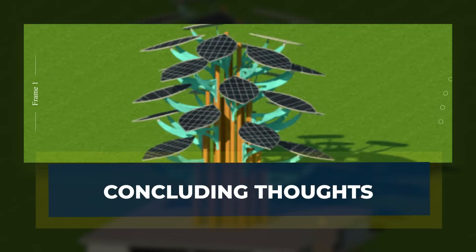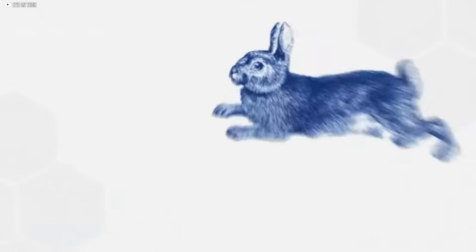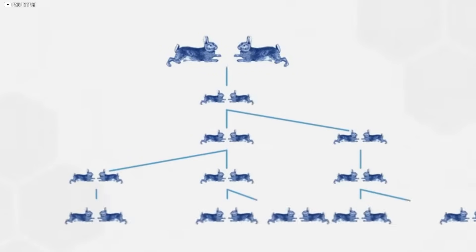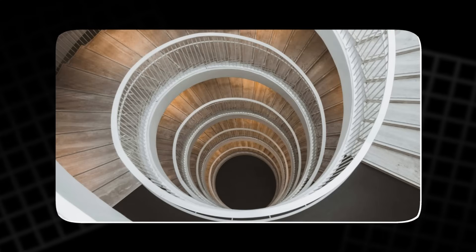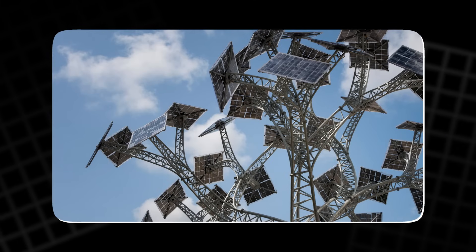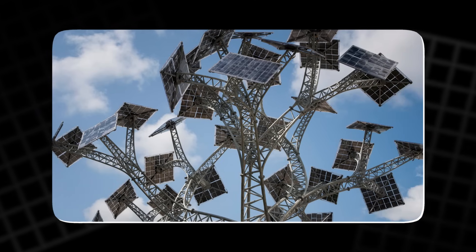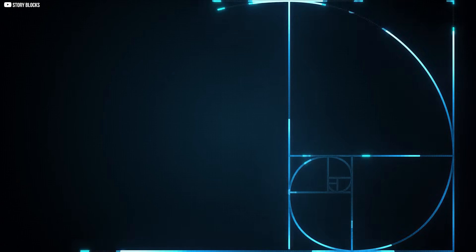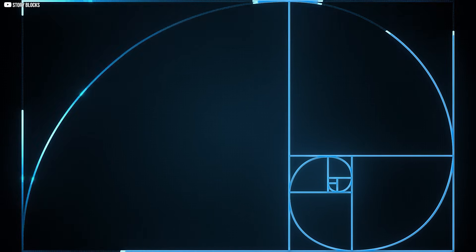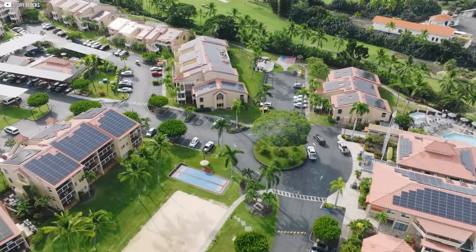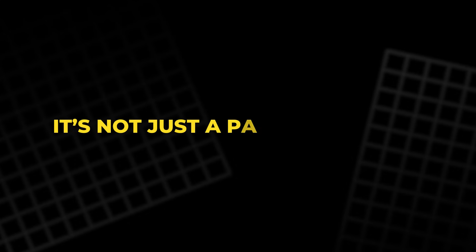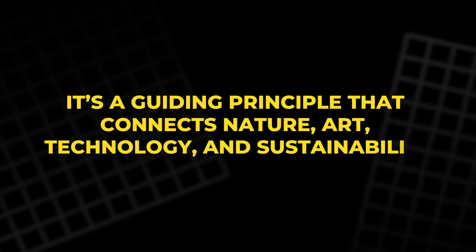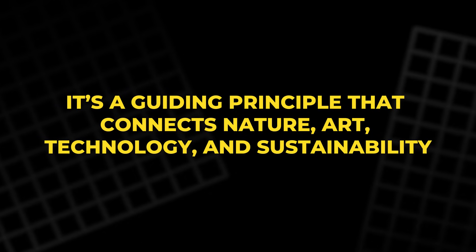In this video, we've explored the rich history of the Fibonacci sequence, its profound impact on art and architecture, and its modern-day applications, especially in the emerging field of solar energy. From the spiral patterns in nature to the design of solar panels, the Fibonacci sequence continues to shape the way we understand and interact with the world around us. It's not just a pattern in math — it's a guiding principle that connects nature, art, technology, and sustainability.